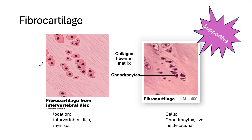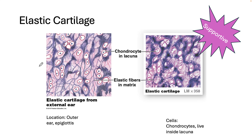Fibrocartilage is the strongest type of cartilage and is used as a shock absorber in the knees and intervertebral discs. The cells are called chondrocytes. Elastic cartilage is the third type, and its main function is recoil — it contains a lot of elastic fibers and maintains the shape of structures like the outer ear and the epiglottis. The cells in elastic cartilage are also called chondrocytes.